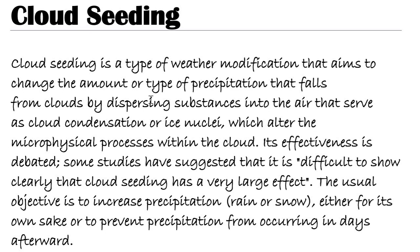Cloud seeding is a type of weather modification that aims to change the amount or the type of precipitation that falls from the clouds by dispersing substances into the air that serve as cloud condensation or ice nuclei, which alter the microphysical processes within the cloud. Its effectiveness is debated.